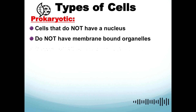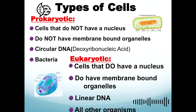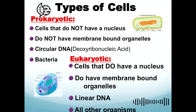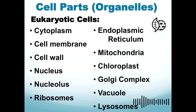Now let's proceed to the types of cells. There are two types: prokaryotic cells and eukaryotic cells. Eukaryotic cells have a nucleus, membrane-bound organelles, and linear DNA — examples include plants and animals. Prokaryotic cells are the opposite of eukaryotic cells; an example is bacteria. These are unicellular, meaning they contain only one cell.